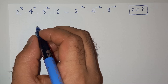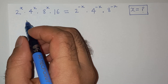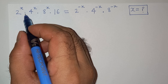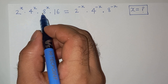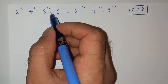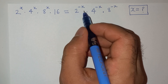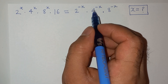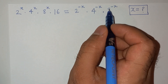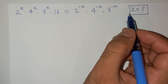Hi guys, welcome back to your channel. We are going to solve this question today, which is 2 power x multiplied 4 power x multiplied 8 power x multiplied 16 equals 2 power minus x multiplied 4 power minus x multiplied 8 power minus x, and we have to find the value of x.